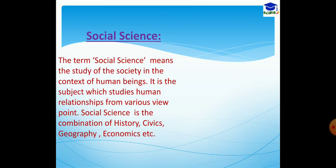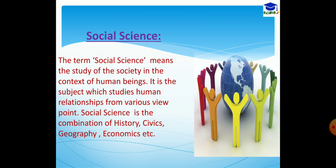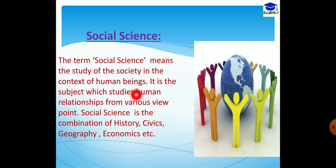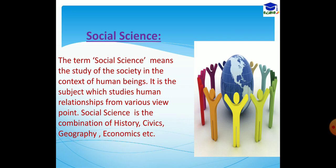First of all, we have to know the term social science, or what the subject social science deals with. The term social science means the study of society in the context of human beings. It is a subject which studies human relationships from various viewpoints. Social science is the combination of history, civics, geography, economics, etc.